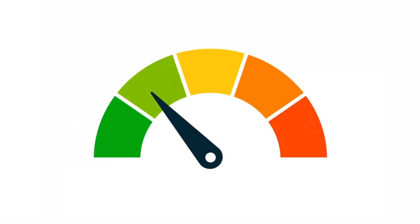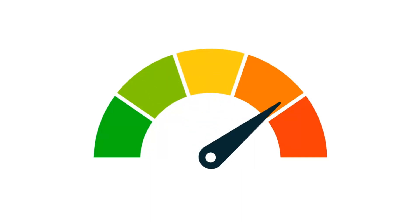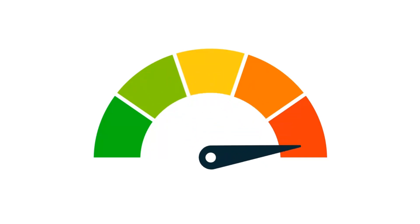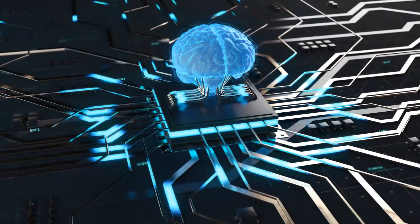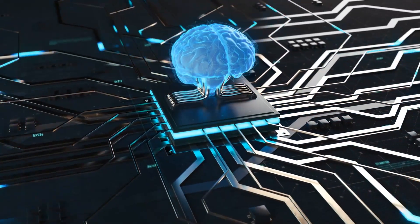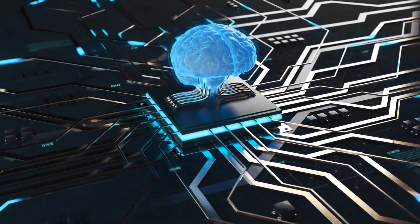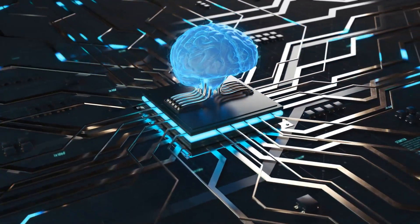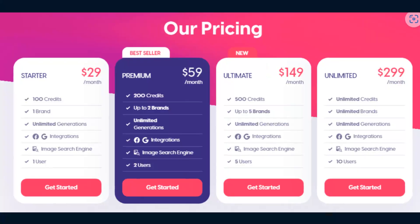Each design includes a rating score — the higher the rating, the more recommended the design is based on the data within the software. What makes the software really unique is that they use machine learning, so the more you use it, the better ad recommendations you're going to get.